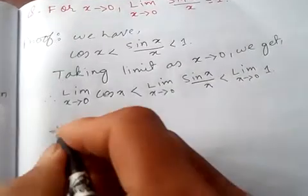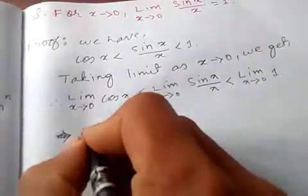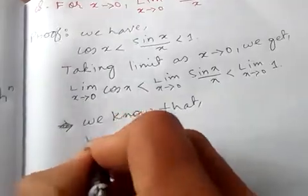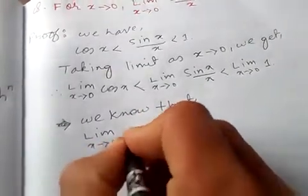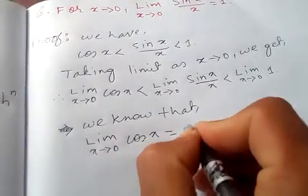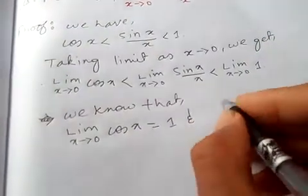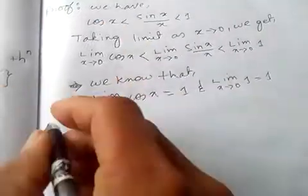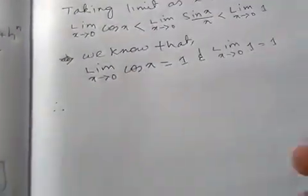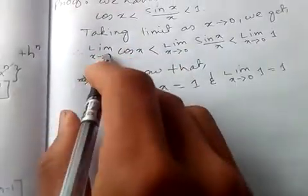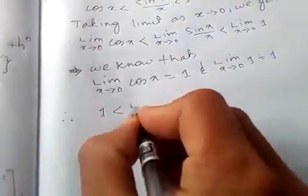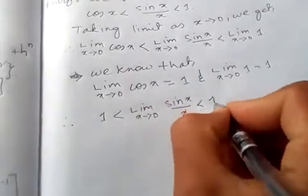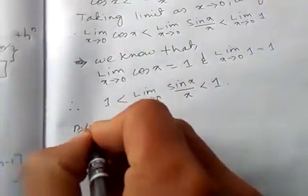We know that limit x tends to 0 of cos(x) is equal to 1, and limit x tends to 0 of 1 is 1. Therefore the inequality becomes 1 less than limit x tends to 0 of sin(x)/x, which is less than 1.